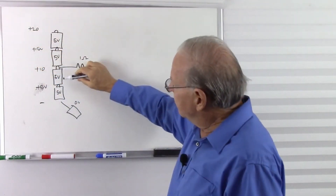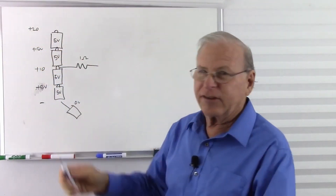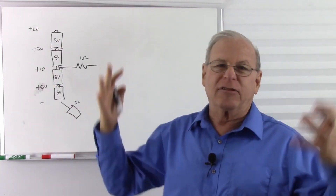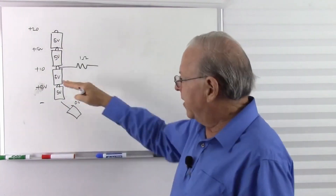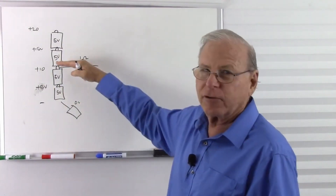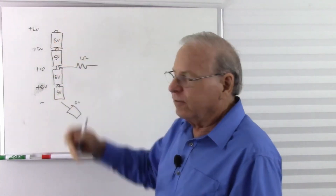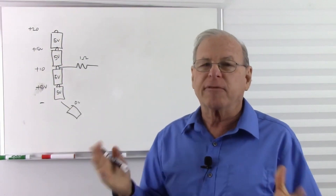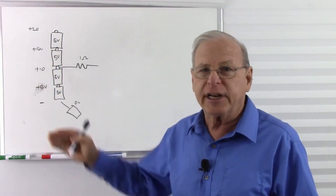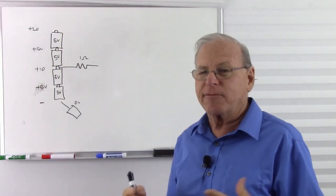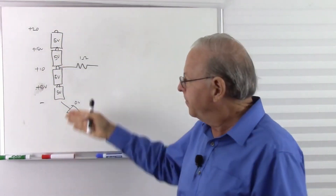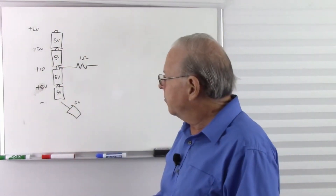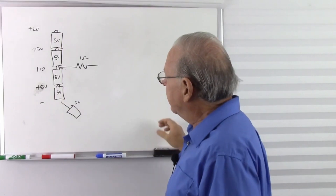So I have a 5-volt difference. It's like stacking buildings on top of each other - 5 stories plus 5 stories makes 10 stories. And voltage works the same way. My voltage is a type of potential energy, and altitude is a type of potential energy, so they work pretty much the same way.